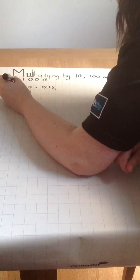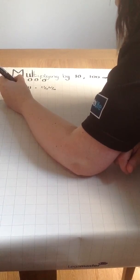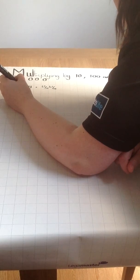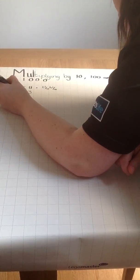This video is going to explain how to multiply by 10, 100 and 1000. Firstly, multiplying by 10.